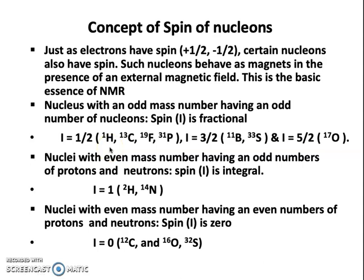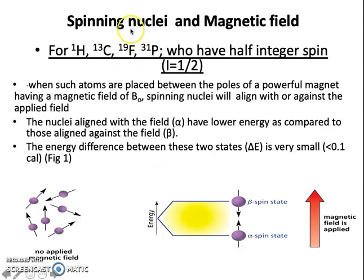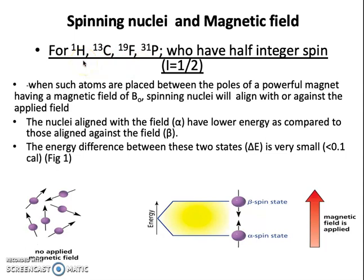Among all nucleons, only hydrogen-1, C-13, fluorine-19, and phosphorus-31 are used in NMR. The most widely used atom in NMR is hydrogen-1, giving rise to hydrogen NMR, and the second is C-13 NMR. These atoms have a spin quantum number equal to 1/2, and for them the spinning nuclei — the protons — behave as magnets. When placed in an externally applied magnetic field, there is a split of the protons.